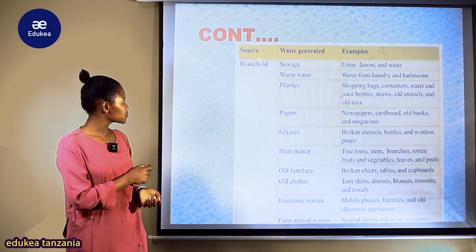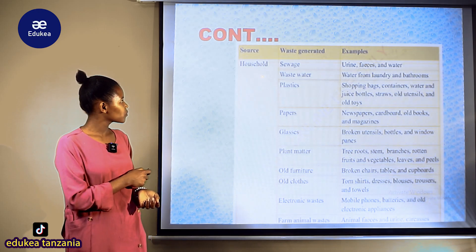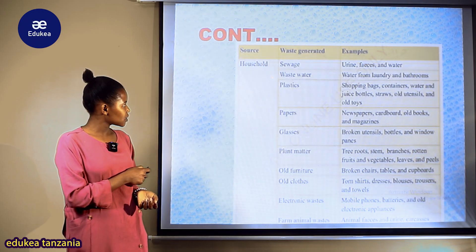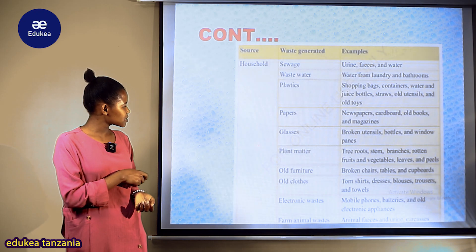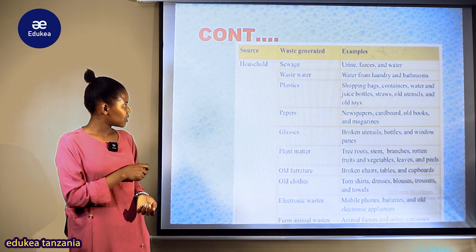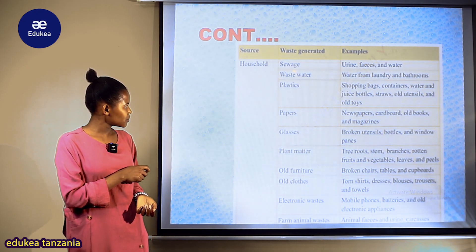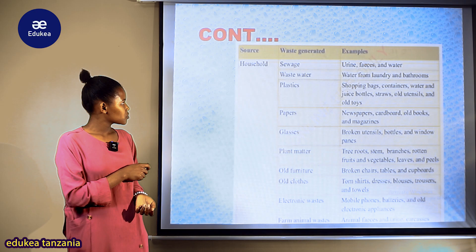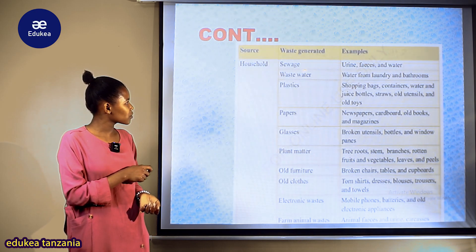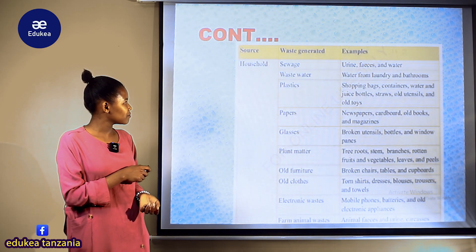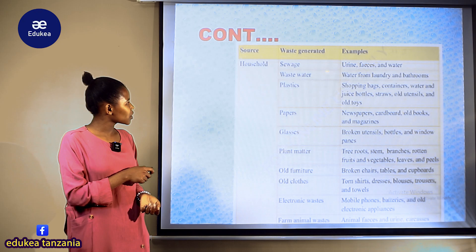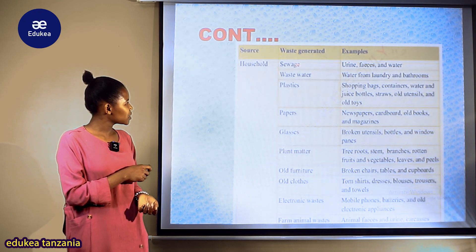Starting with the household as a source of waste, we can see that there are several waste generated from household, in which there is sewage. Tukizungumzia sewage tunamaanisha ni ule uchafu uloko katika hali ya maji-maji — we can see that there is urine, feces, and water.